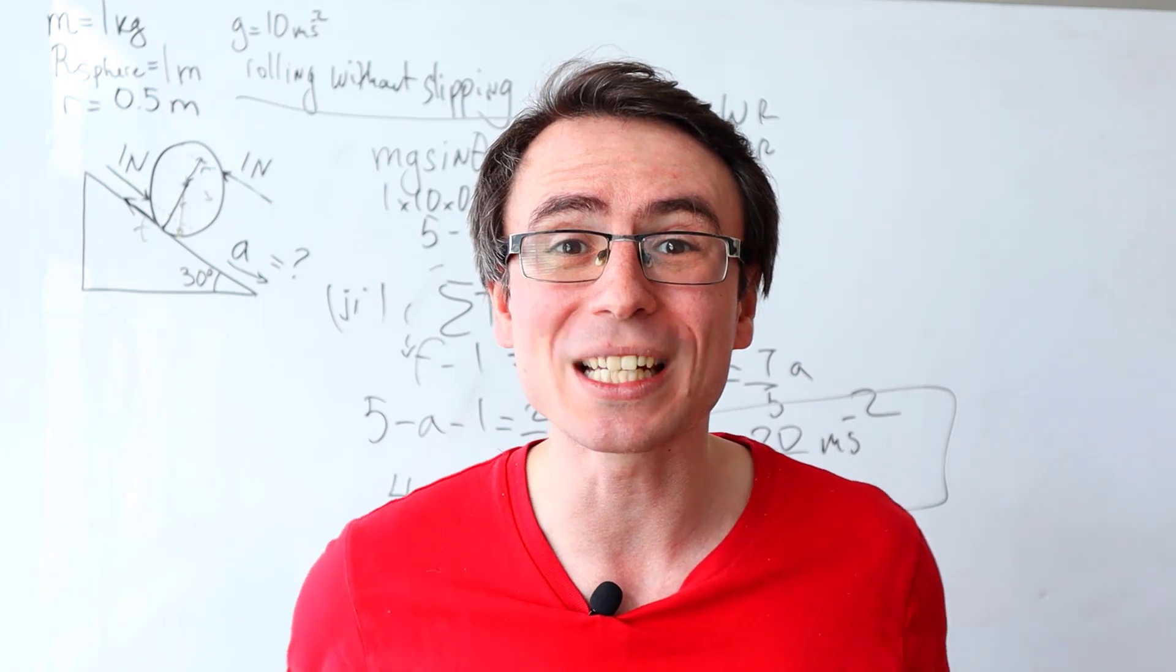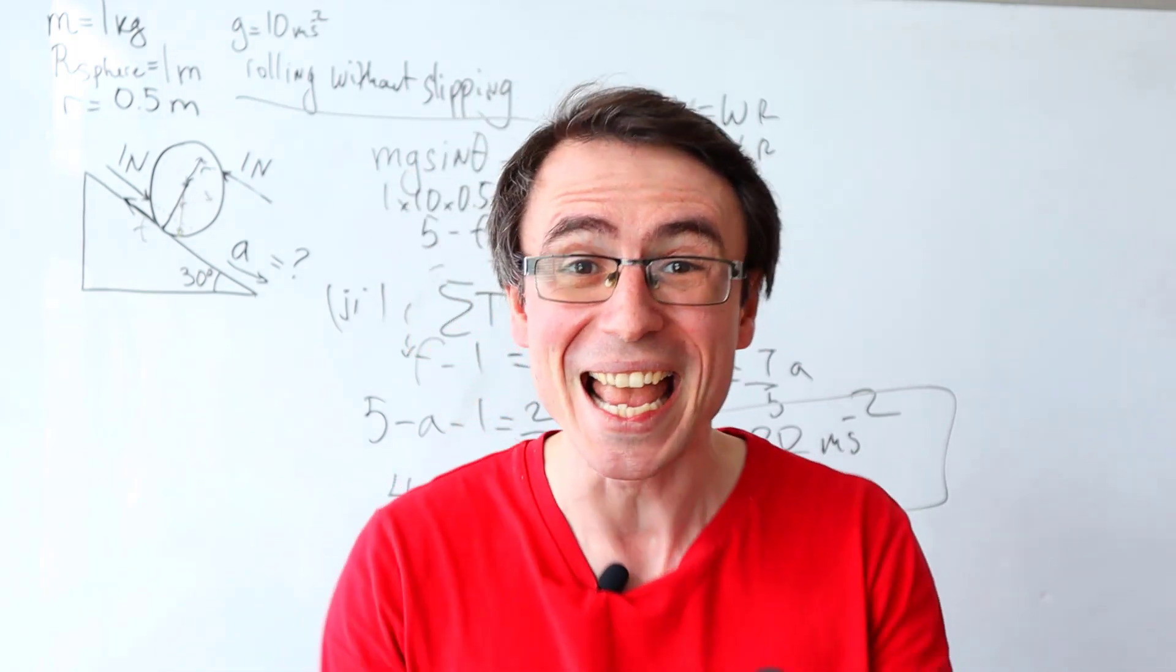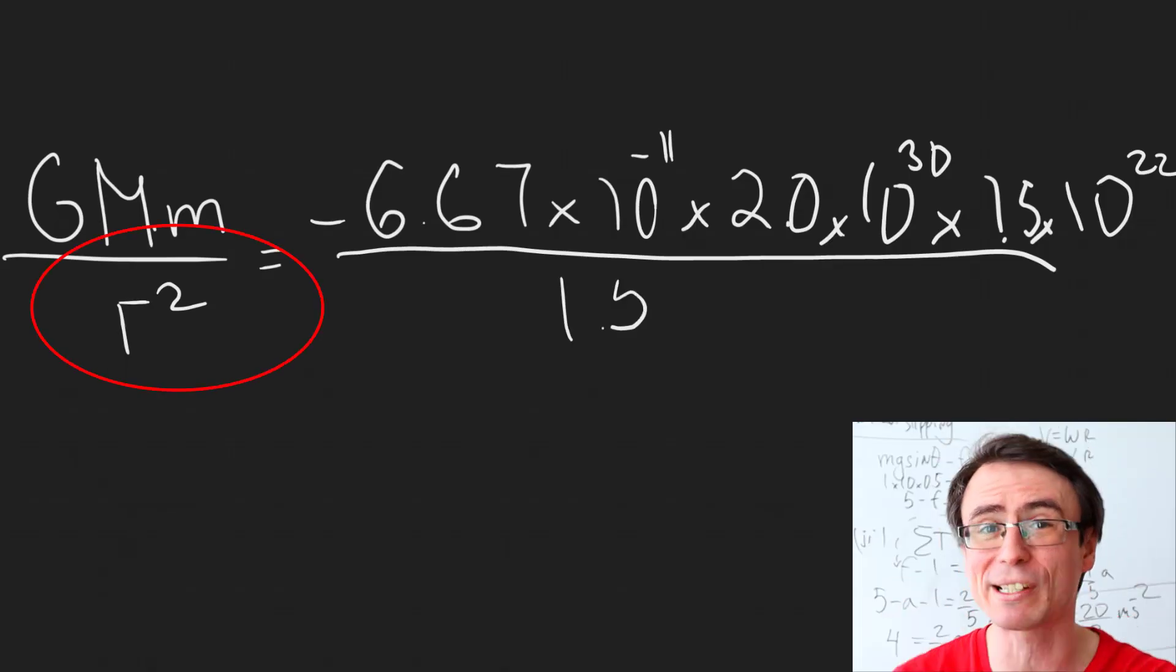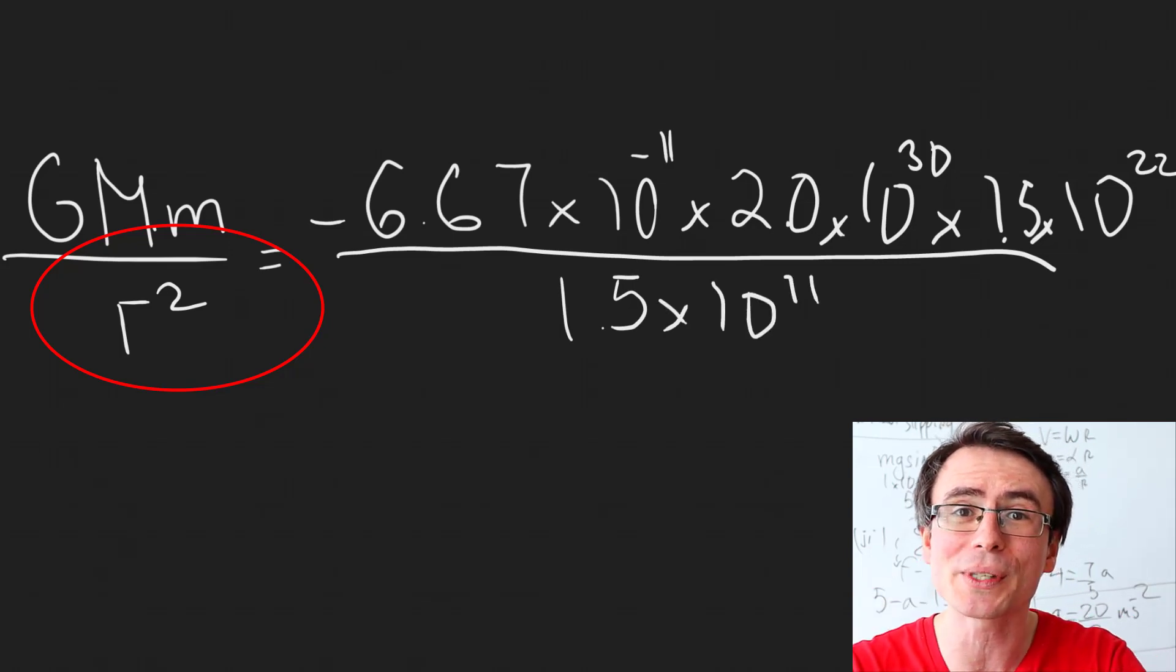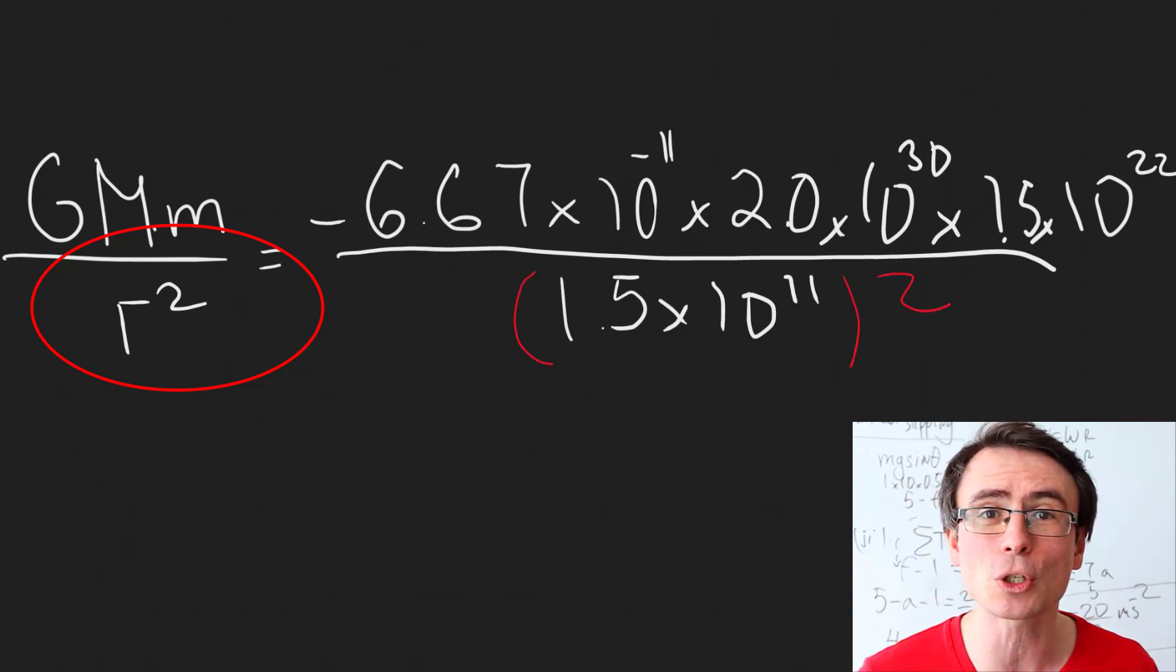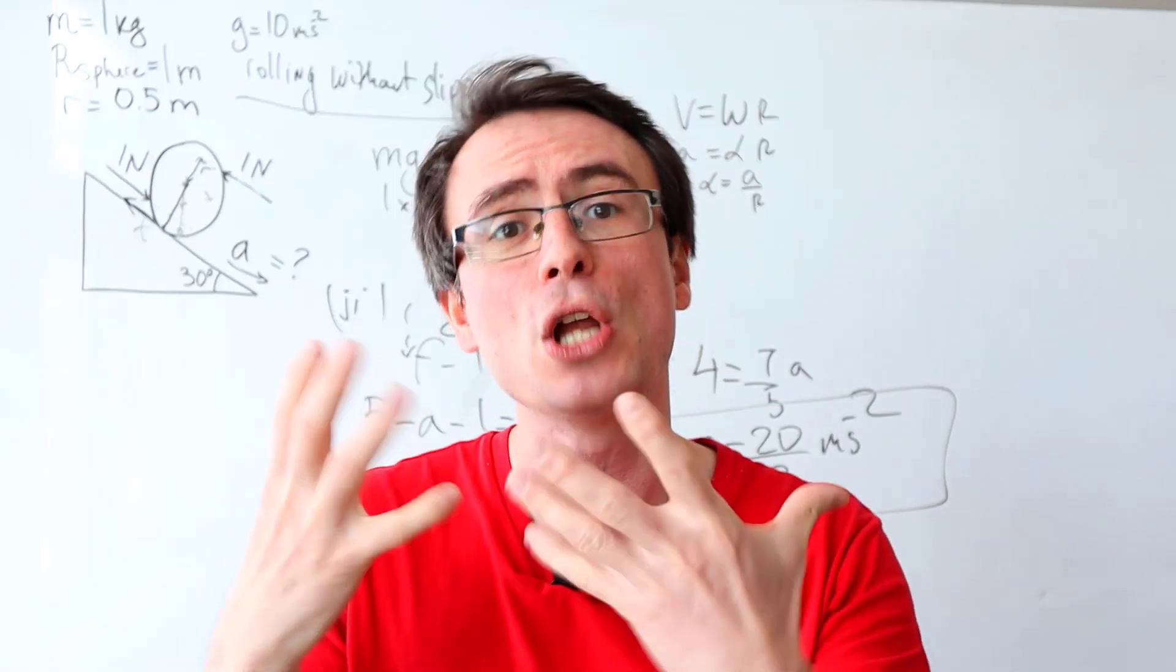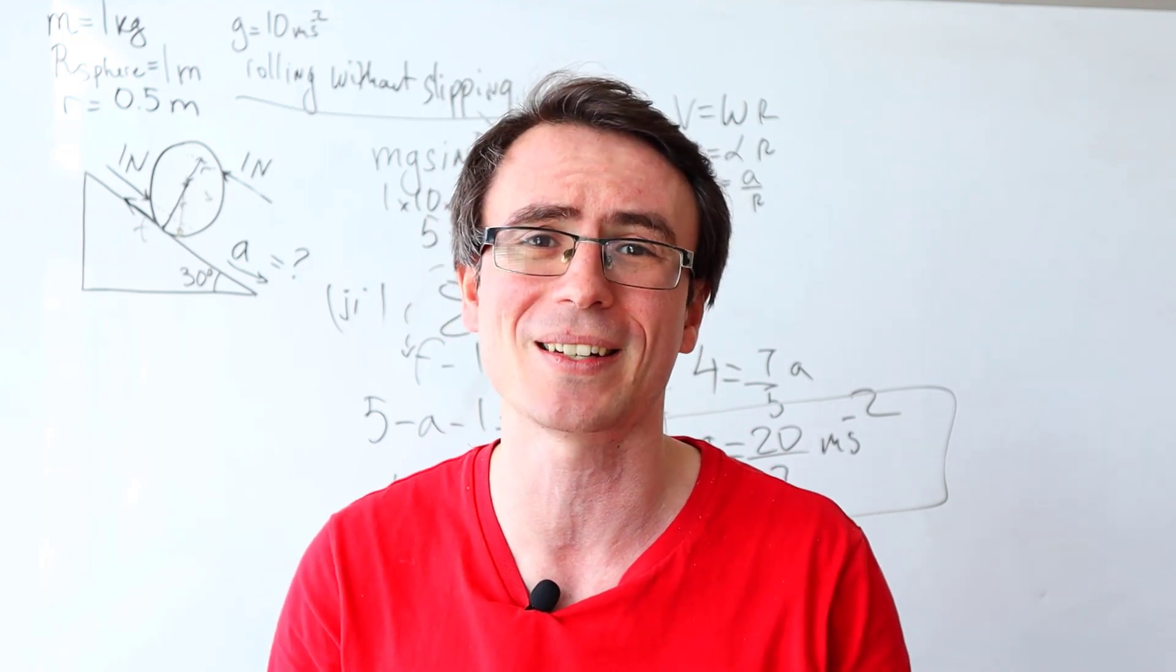And my final tip is incredibly simple but believe me every time I mark papers it is the single most common mistake and that is simply forgetting to carry through a square or a cube when you're going through an equation. Anytime you're using an equation such as Newton's law for gravity please make sure to just be aware that this is an incredibly common mistake as you keep on writing it. Tell yourself not to forget the square that will really reduce the amount of mistakes that you get.